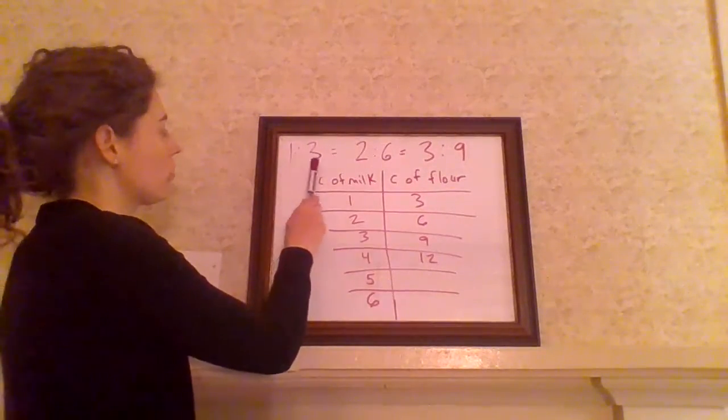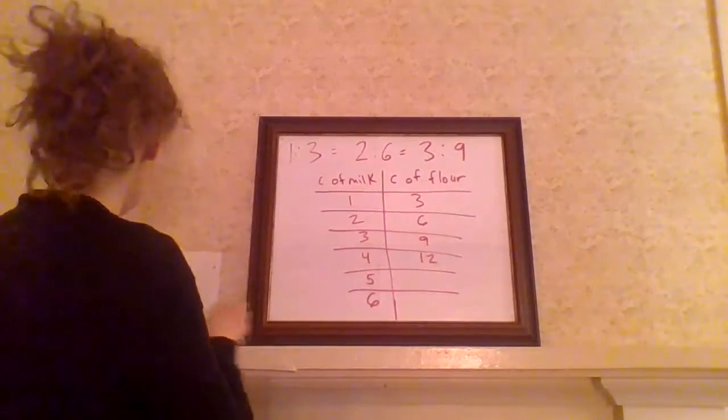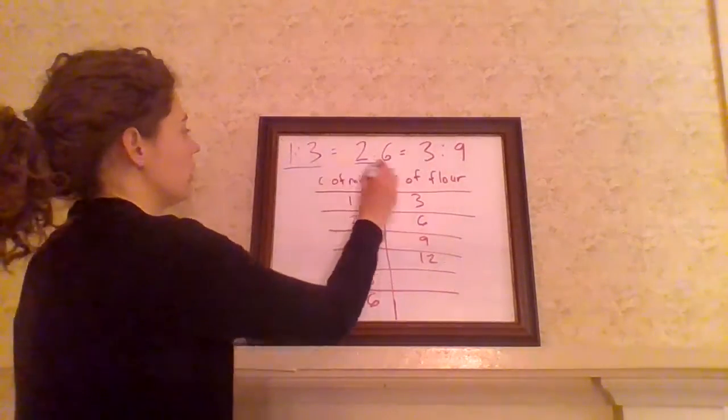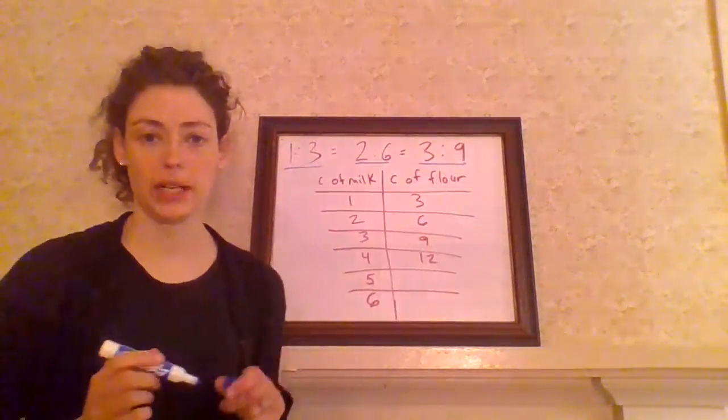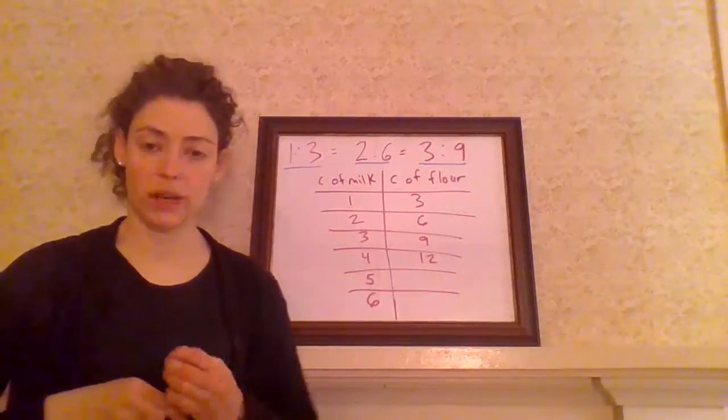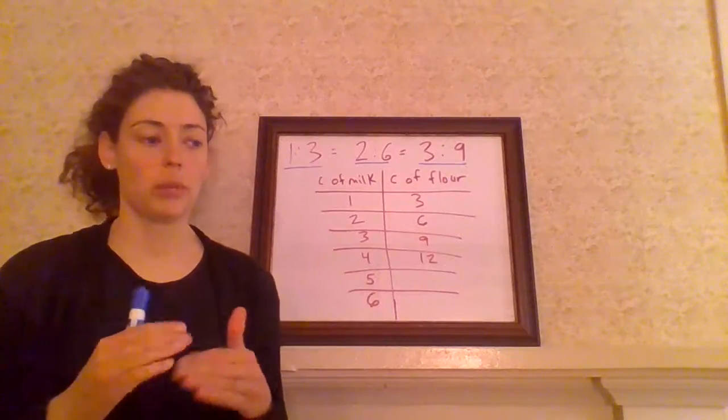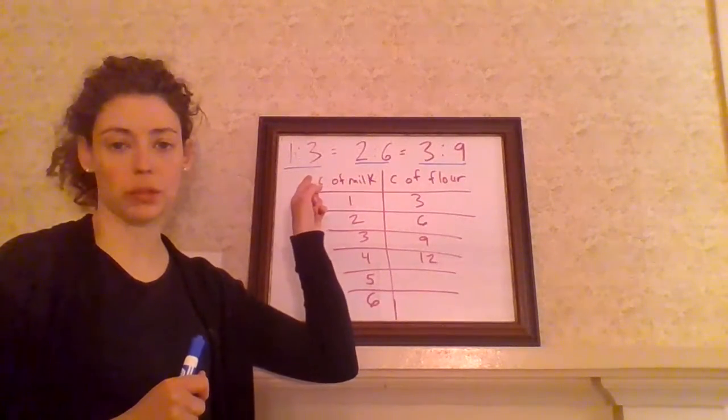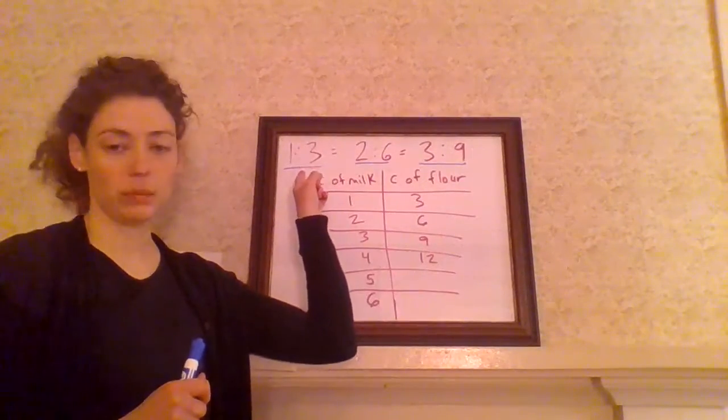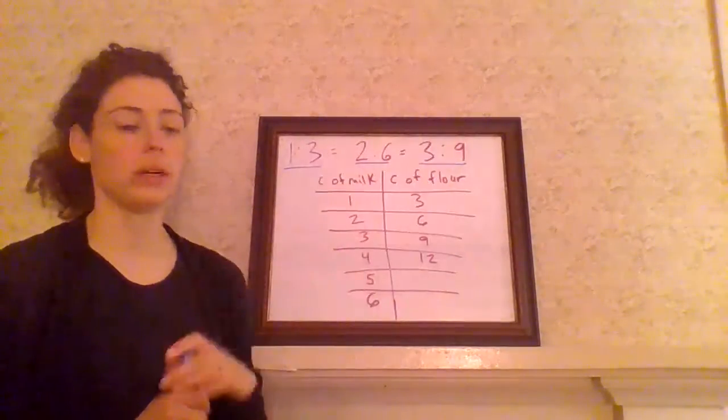So here's two to six. And two to six is equal to three to nine. So you can use these ratios to figure out how much of something. If you know the relationship between these two numbers, you can find what that relationship is between a much higher number as well.